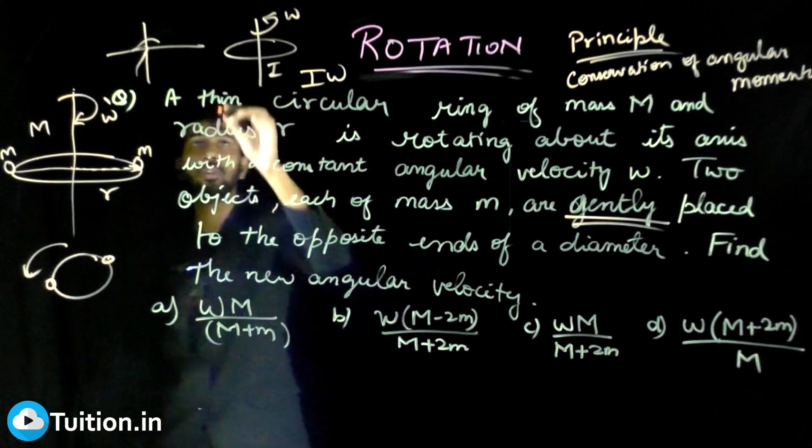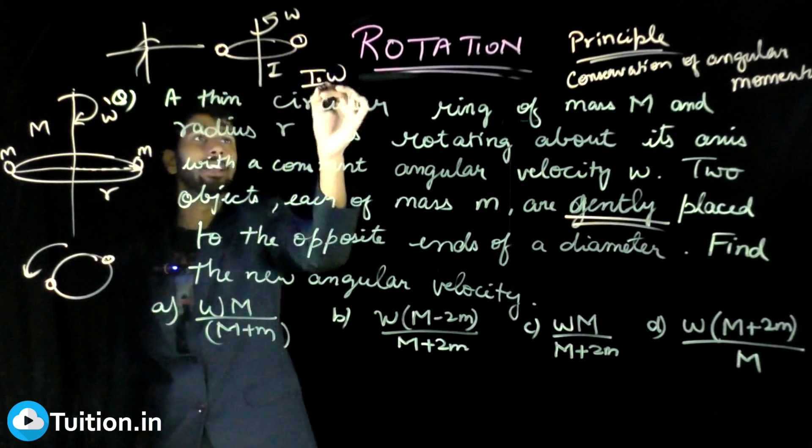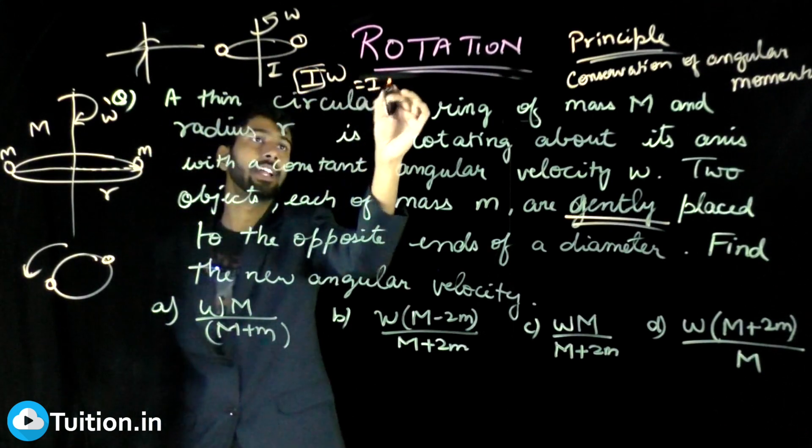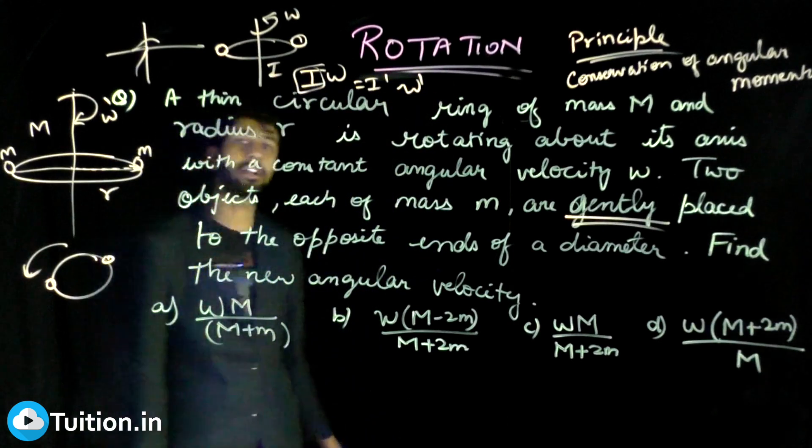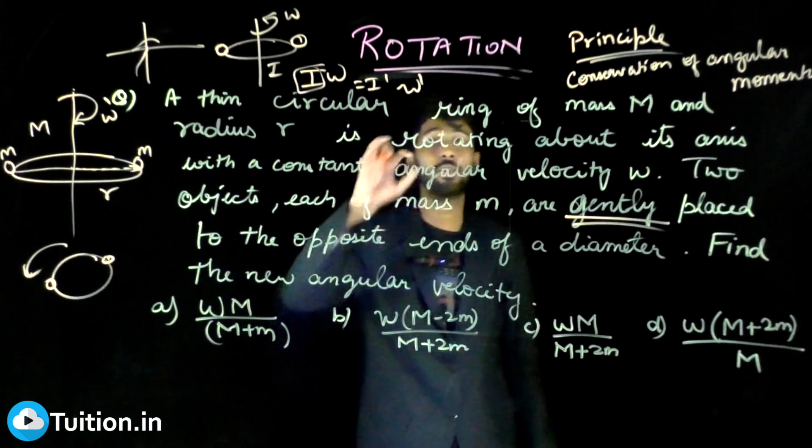Now what happens is when you place two masses, this I changes to some I dash. That is the reason why omega should change to some omega dash so that their product is the same as what it was before. Let's use this now.